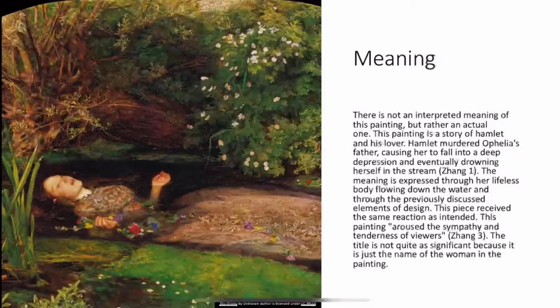There is not an interpreted meaning of this painting, but rather an actual one. This painting is a story of Hamlet and his lover. Hamlet murdered Ophelia's father, causing her to fall into a deep depression and eventually drowning herself in the stream. The meaning is expressed through her lifeless body flowing through the water and through the previously discussed elements of design.